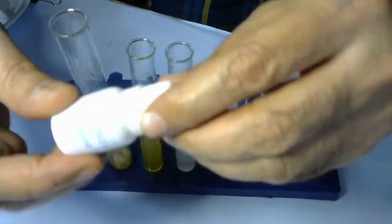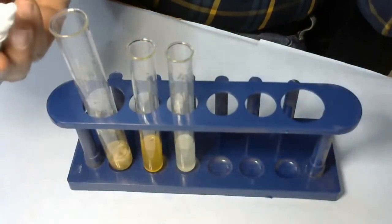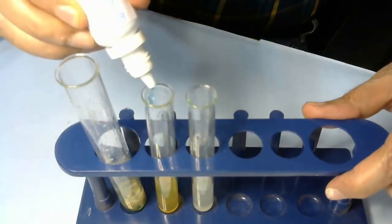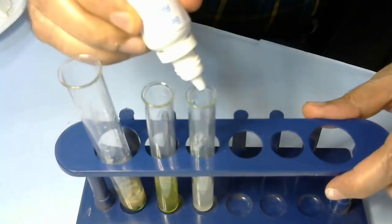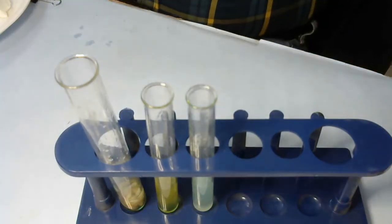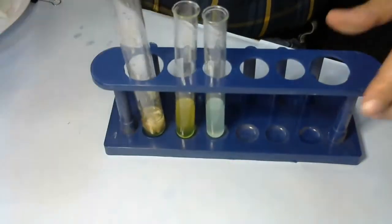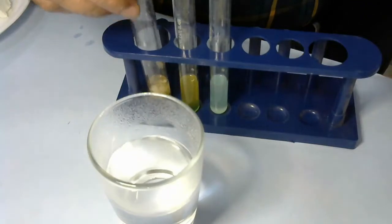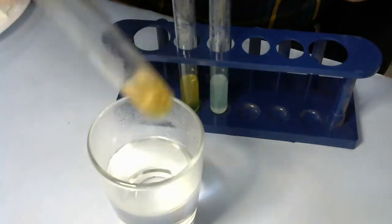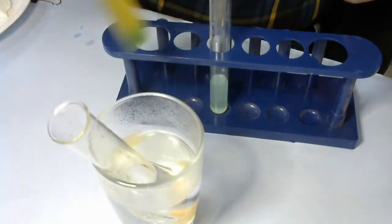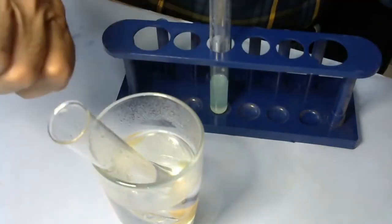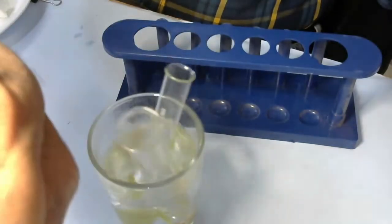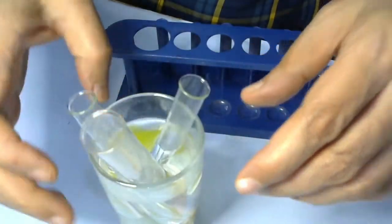For testing purposes, we're taking Benedict's reagent and will add about 10 to 15 drops in each test tube. Now we have to keep these test tubes in hot water. We've taken hot water into a glass. After mixing a little bit, we have to dip these test tubes. We've shaken the test tubes so the Benedict's reagent mixes with the solution, and now we've kept them in hot water.